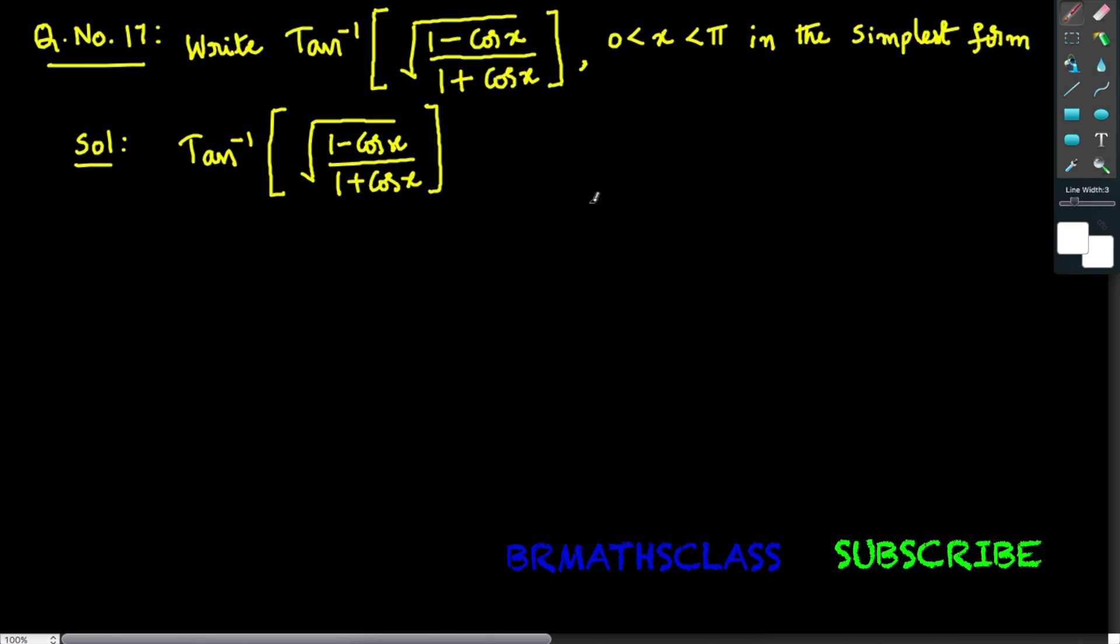We know these formulas from trigonometry: 1 minus cos x equals 2 sin squared (x/2). I will write these formulas in the given expression.